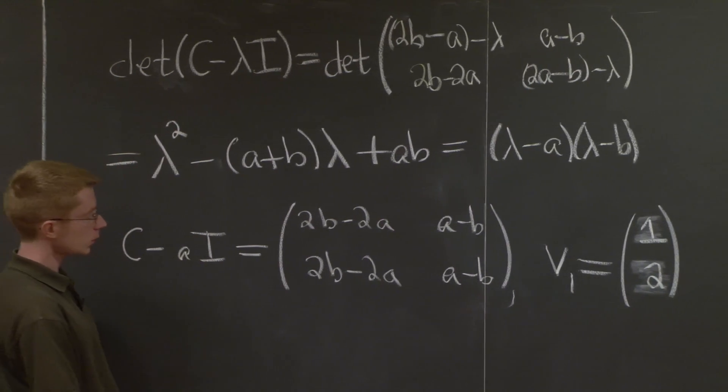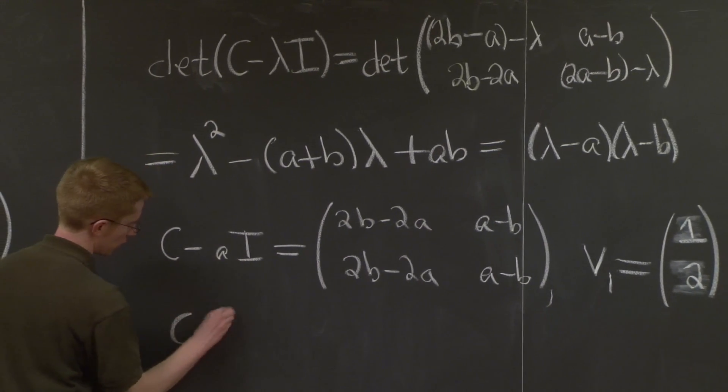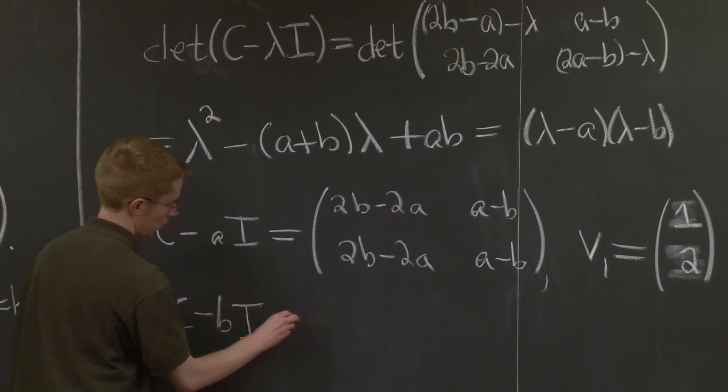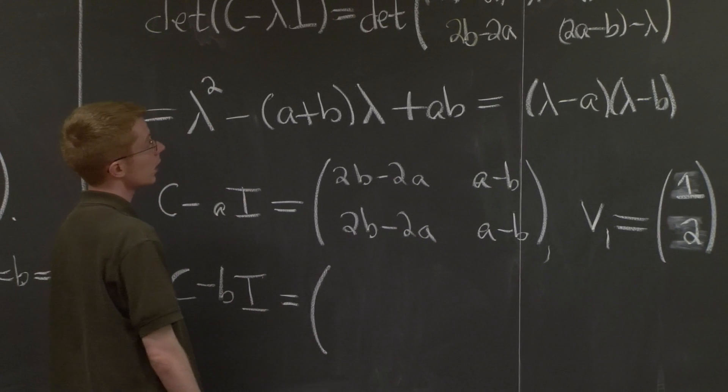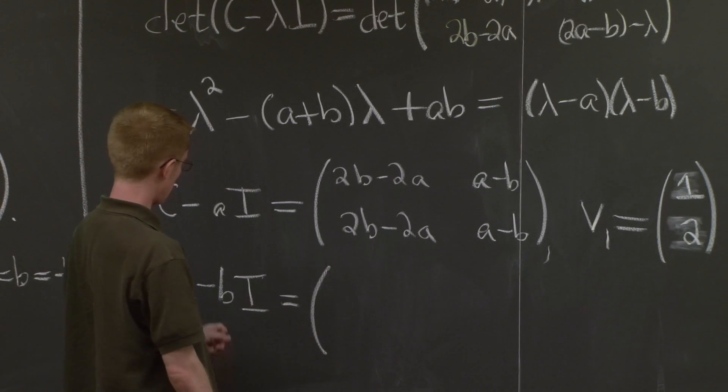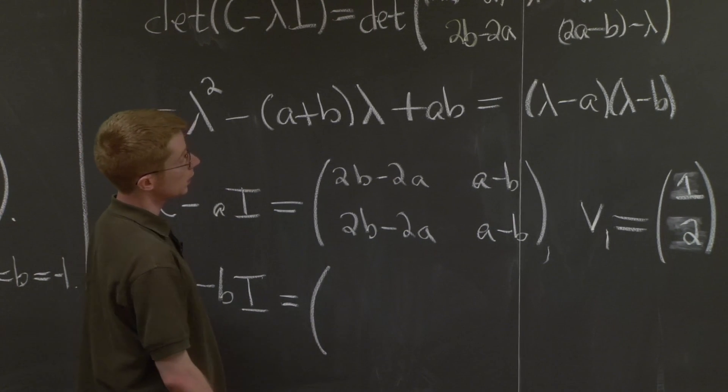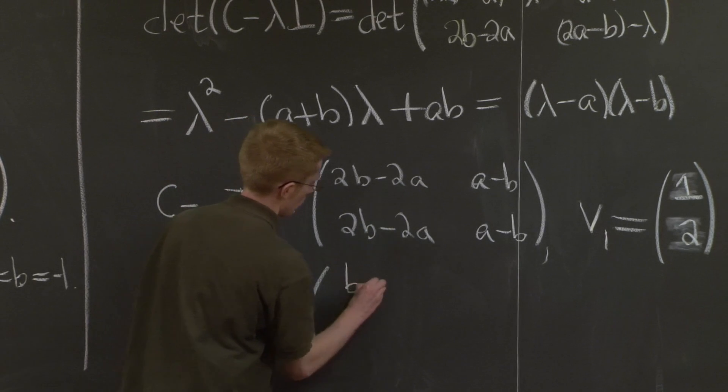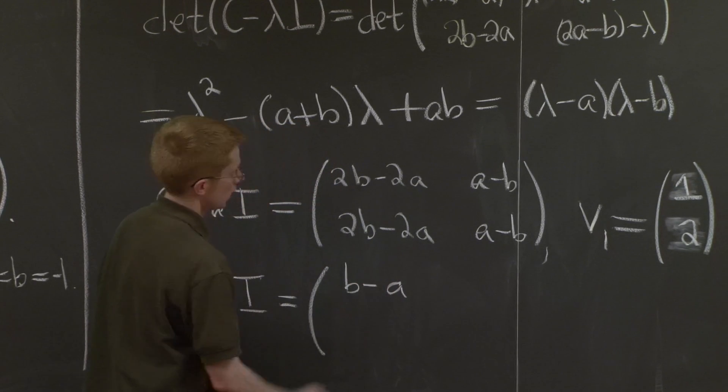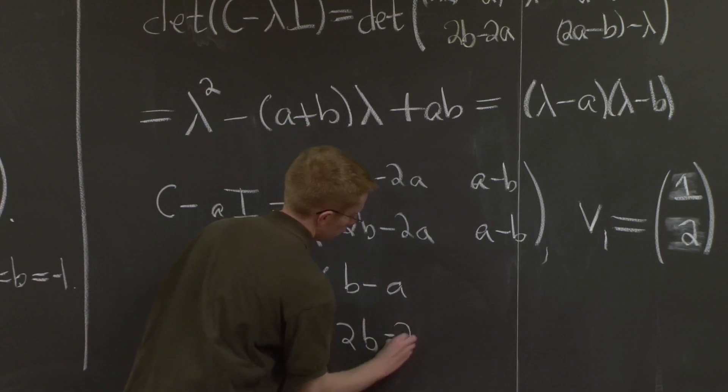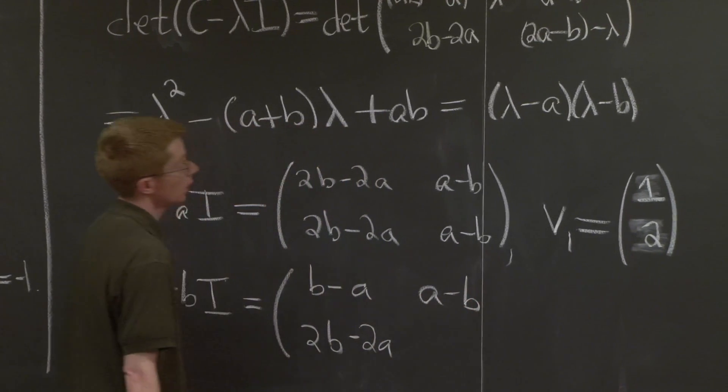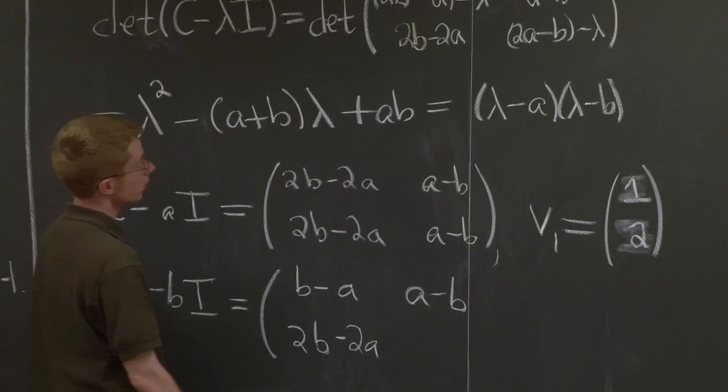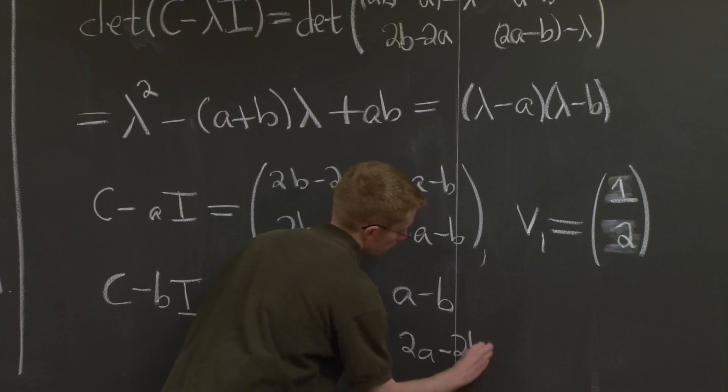Now, well, I guess we have space to do the second one, too. Why not? So let's write out the second one, also. Here we're subtracting B instead of A. We get B minus A. We get 2B minus 2A. We get A minus B. And what do we have here? So here we have 2A minus 2B.